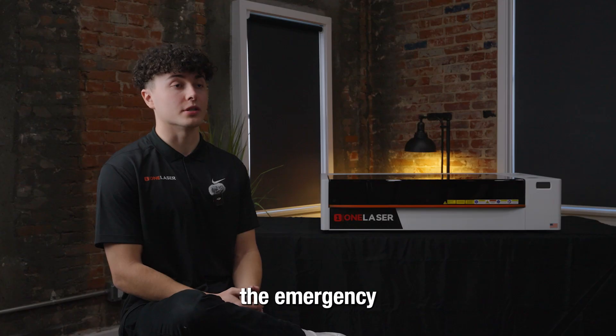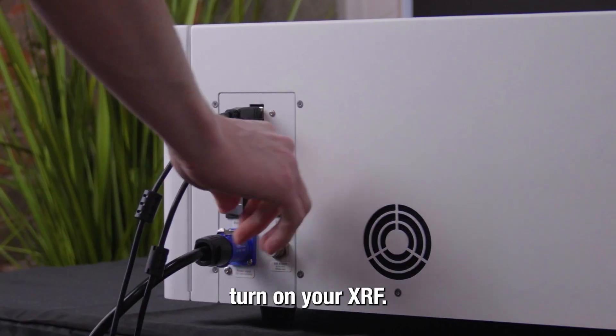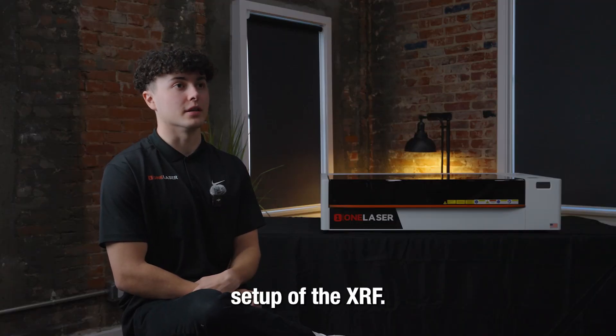Now release the emergency stop located on the side of the machine—it's a big red knob. On the back of the machine, you'll find the switch to turn on your XRF. That's it for the physical setup of the XRF.